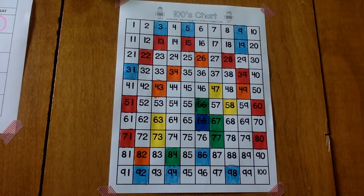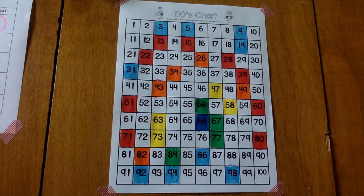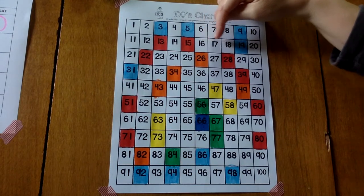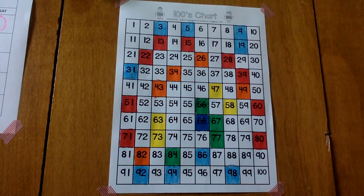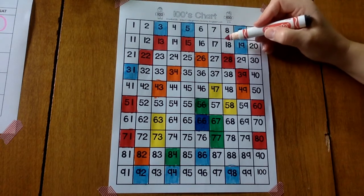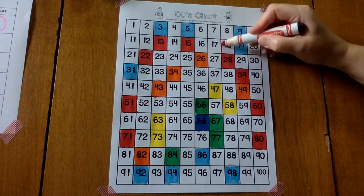And now, number 18. In the teens row, 15, 16, 17, 18. A 1 and an 8 make number 18. And it is red today.